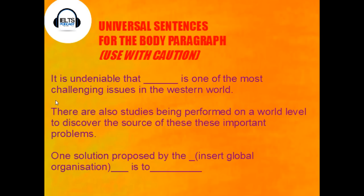Here are some universal sentences that we could just drop into the body paragraphs or maybe the introduction. These are very good but we have to use them with caution because we need to get the context correct. For example: 'It is undeniable that pollution is one of the most challenging issues in the western world.' And: 'There are also studies being performed on a world level to discover the source of these important problems.' But examiners can spot these sentences, so they have to be used with caution.